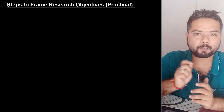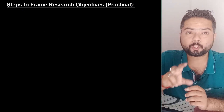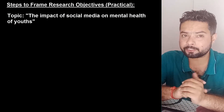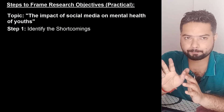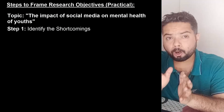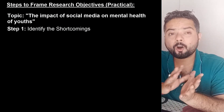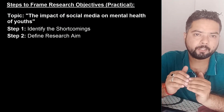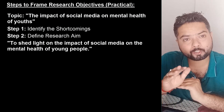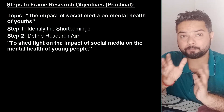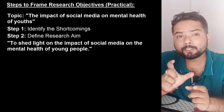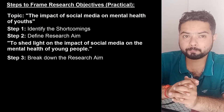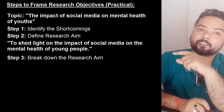Let's understand this with an example. Suppose your topic is the impact of social media on the mental health of youth. In step 1, identify the shortcomings by reviewing existing literature on this topic. In step 2, define your research aim — for example, to shed light on the impact of social media on the mental health of young people. In step 3, break this aim into smaller research objectives.